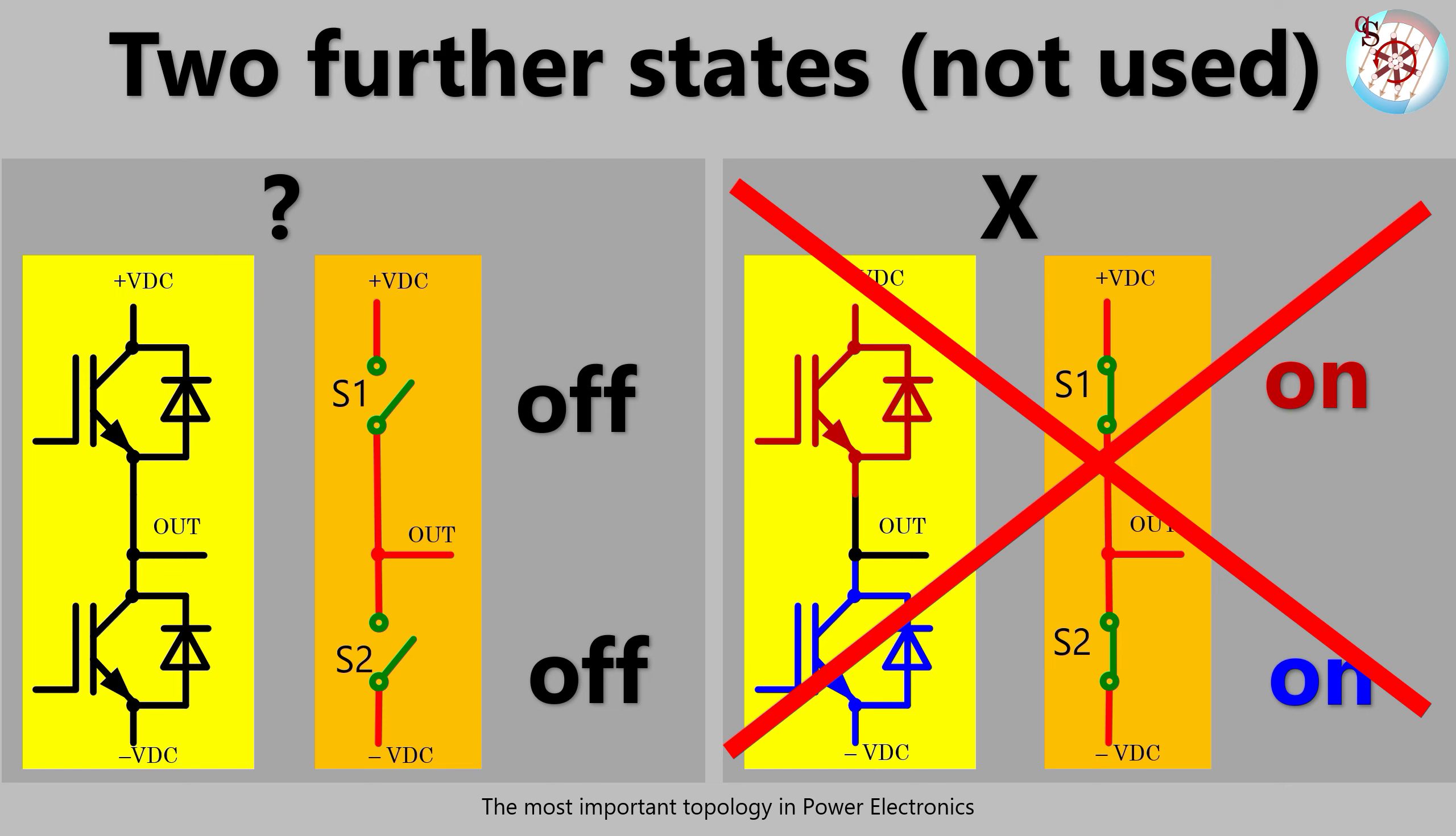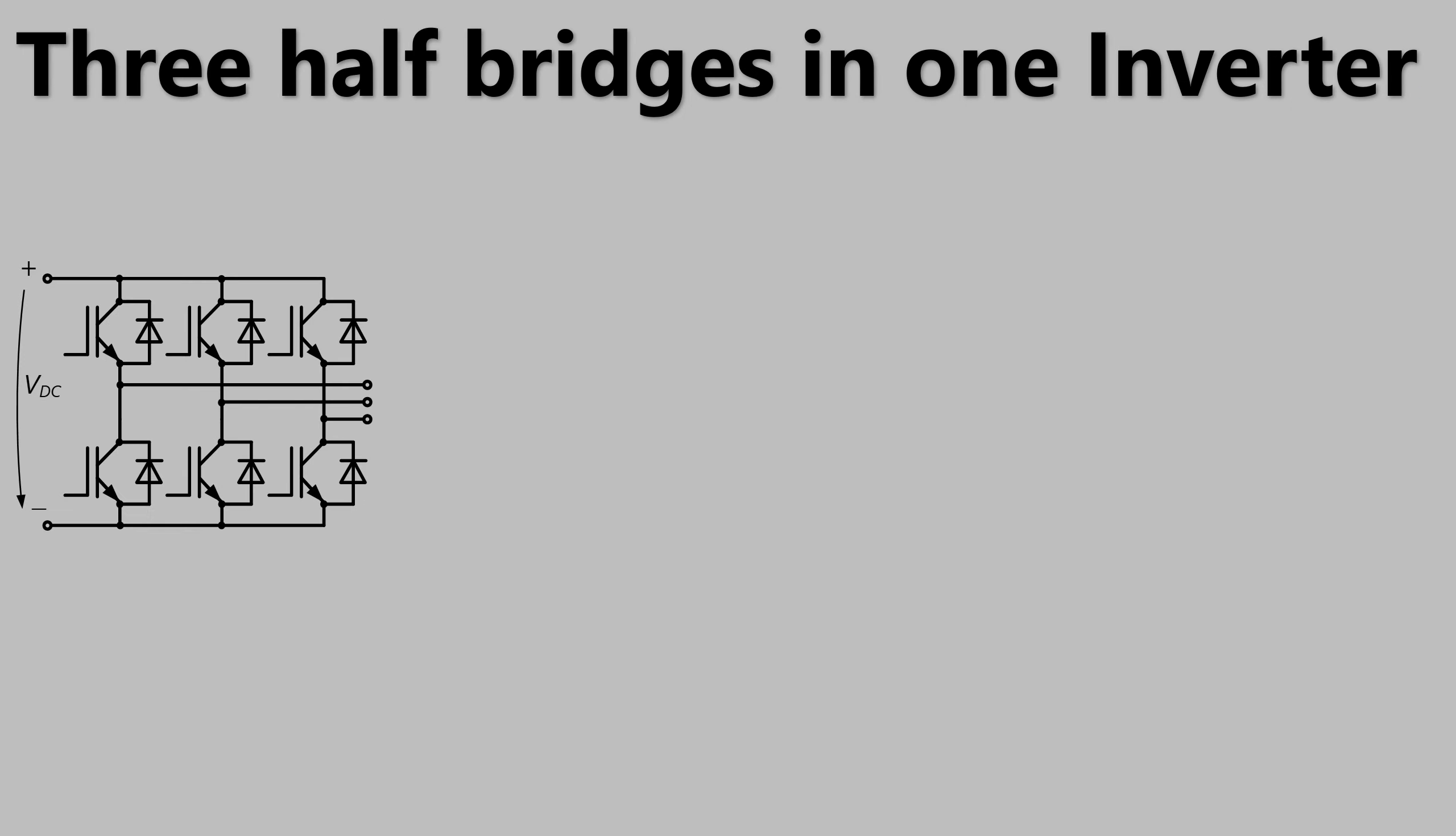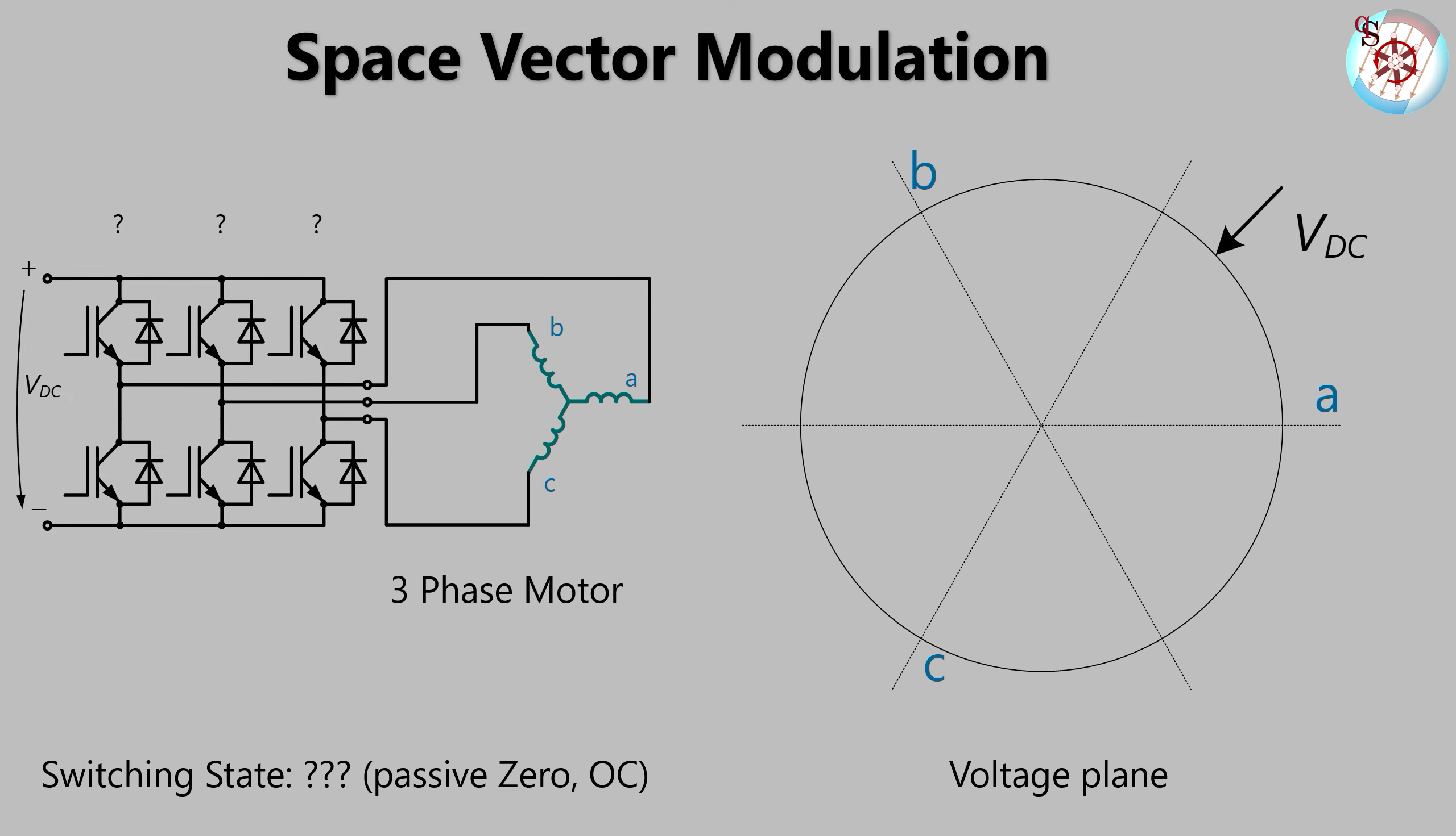In order to assemble an inverter, we need three half-bridges. We connect a three-phase motor to it while having the entire inverter in off mode or question mark state. As just mentioned, this is basically the motor disconnected from the inverter with one exception though.